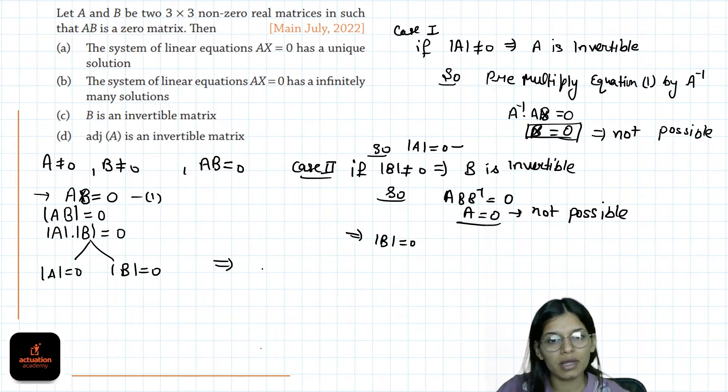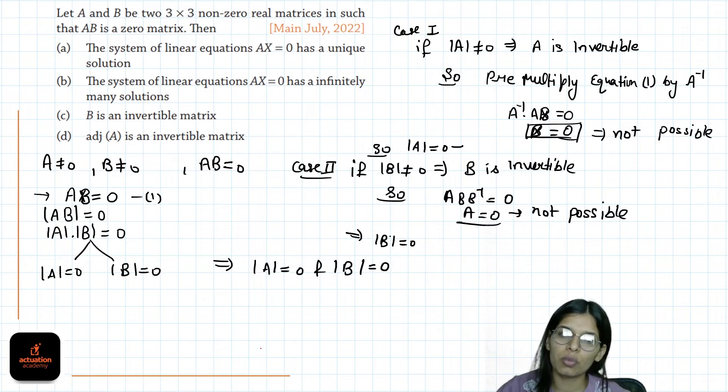So this implies determinant of A is 0 and determinant of B is 0, both. If determinant of A is 0 and determinant of B is 0.